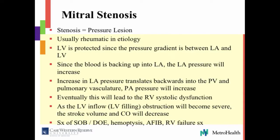The gradient is between the left atrium and the left ventricle. This is where you have to push the blood through to get to the left ventricle. Your preload is decreasing because the left atrium has to do a lot of work to open up that mitral valve that's stiff. Usually, it is rheumatic in etiology, and the left ventricle is protected because the pressure gradient — the left atrium is doing all the work.